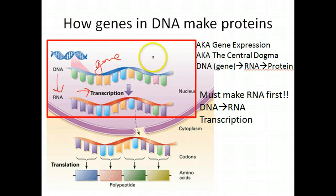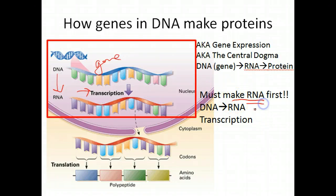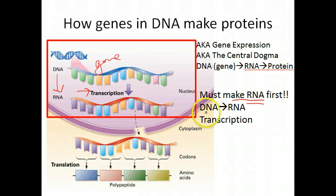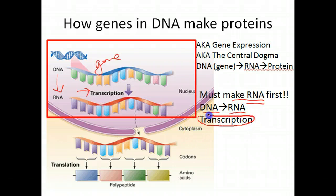The information in a gene is used to make a protein, but there's a stop we have to make first. You have to make RNA first before you can get to that protein. This transition from the language of DNA to the language of RNA is called transcription — a term you really need to know for this topic to make sense.